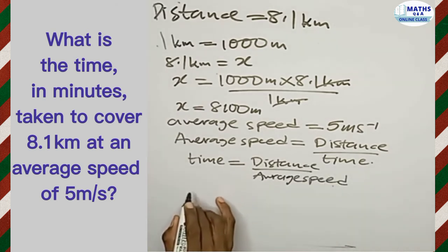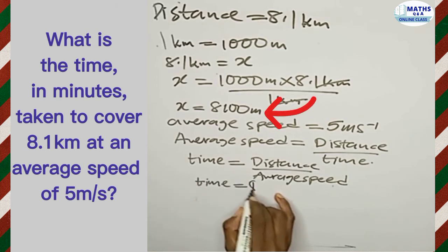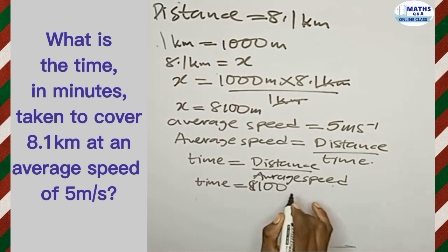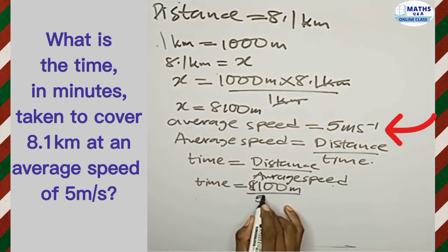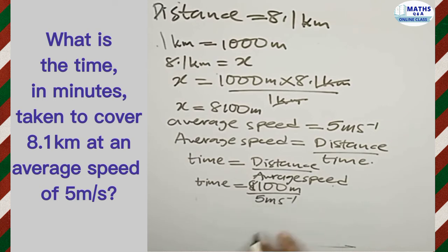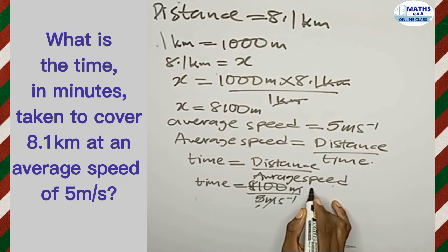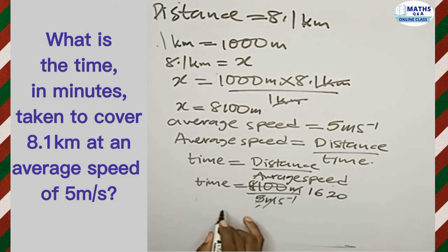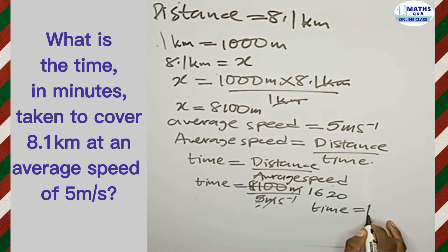Our time will now be equal to eight thousand one hundred meters divided by the average speed, which is five meters per second. The meters cancel out. Five divides into eight thousand one hundred one thousand six hundred and twenty times. So our time is equal to one thousand six hundred and twenty seconds.